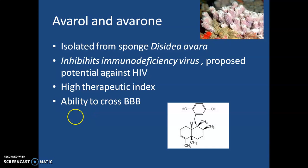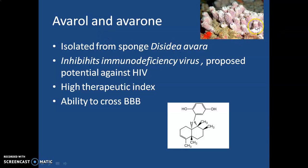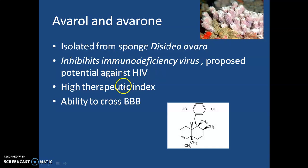Another antiviral compound is avarol and avarone. These are obtained from Dysidea avara, another porifera sponge animal, which inhibits the immunodeficiency virus. It is specifically active against HIV. It has a high therapeutic index, making this drug quite safe.